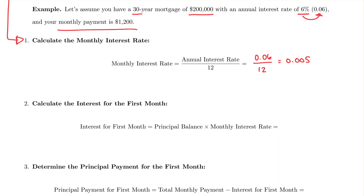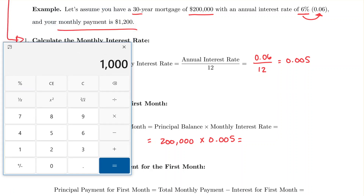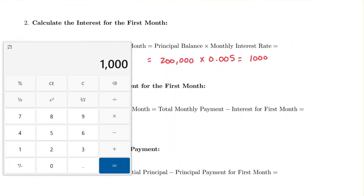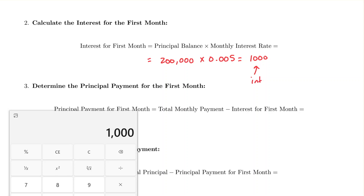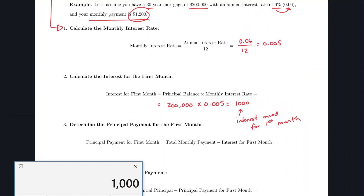To calculate the interest for the first month, take the principal balance — still $200,000 since no payments have been made — and multiply by 0.005, giving $1,000 in interest for the first month. Our monthly payment is $1,200, so subtracting the $1,000 interest, $200 goes towards reducing the principal.